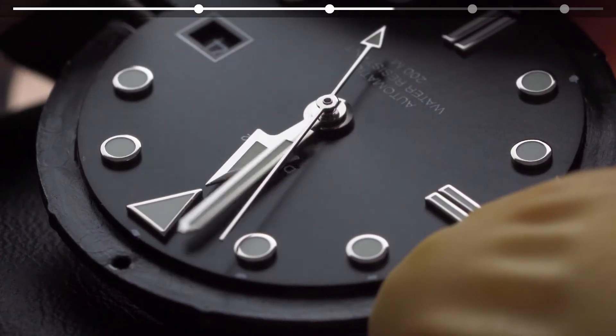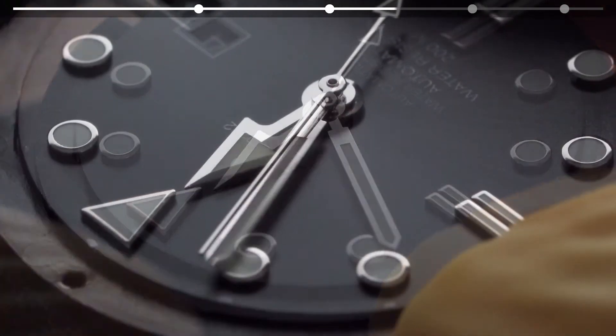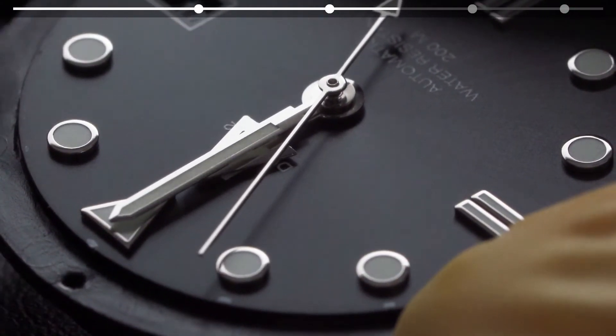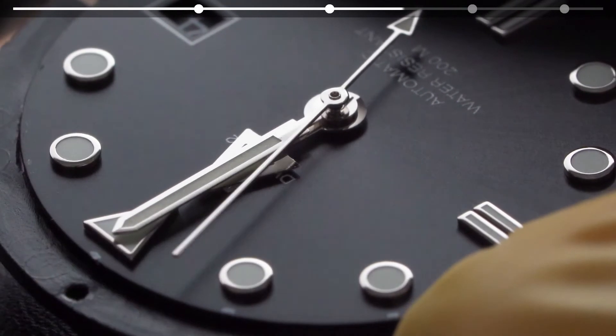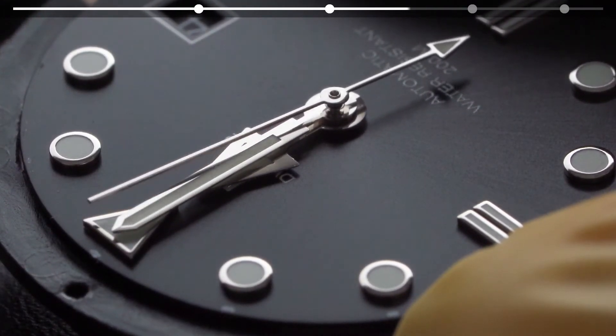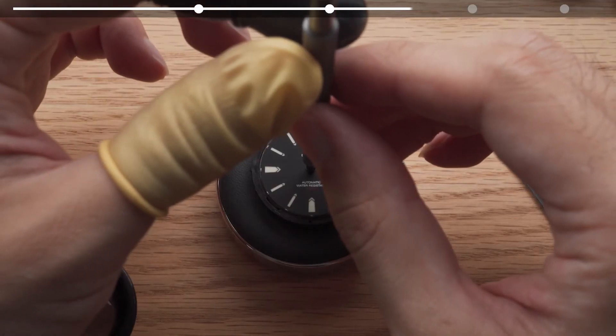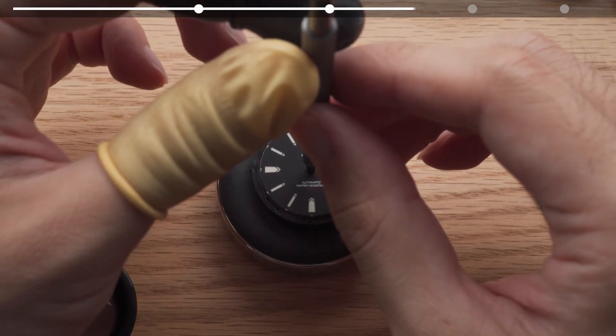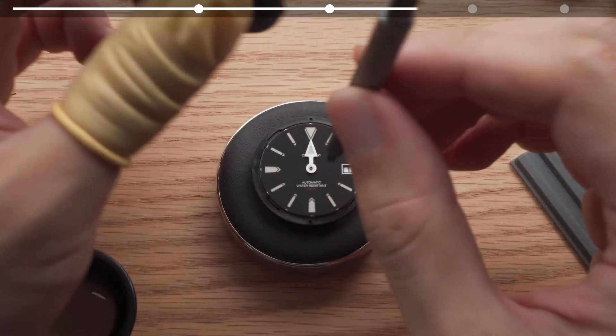Generally, we try to set all hands as low as possible without touching any components below, as that will leave us more space for components above. Setting your hour hand too high will force you to set the minute and second hands higher, which may result in your second hand getting caught by the crystal.